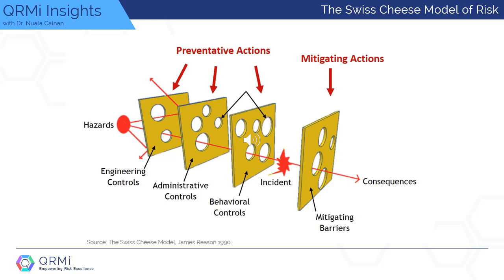How effective are your risk controls? Let's look at James Reason, who proposed the image of the Swiss cheese model to explain the occurrence of system failures such as those that arise during a medical mishap. In complex systems, hazards are prevented from causing human losses by a series of barriers, as depicted here.